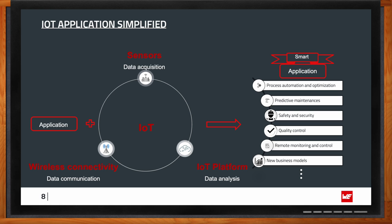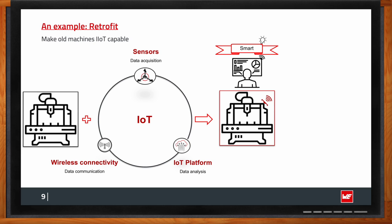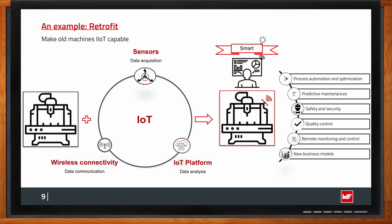A big trend in IoT is making old machines smart — retrofitting. Consider an old cutting machine in an industrial environment, perhaps 10 to 15 years old but still working fine. Investing in a new internet-connected machine would cost a lot, but we can still optimize industrial processes through retrofitting — fitting the machine with sensors and wireless connectivity so that data can be acquired and sent to a data platform, analyzed, and used to provide new insights, making an old machine smart.